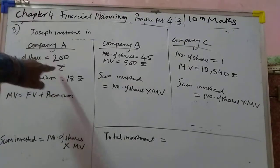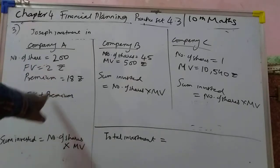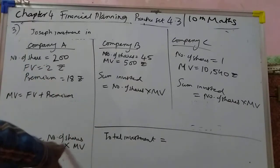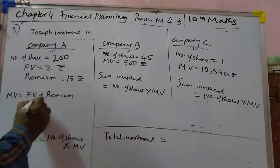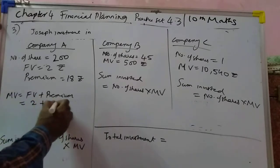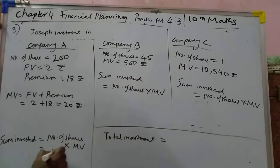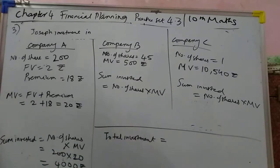Third problem: Company M has number of shares 200, face value 2 rupees, and premium 18 rupees. For sum invested, the formula is number of shares into market value. Market value equals face value plus premium, which is 2 plus 18 equals 20 rupees. So sum invested equals 200 multiplied by 20, which becomes 4000 rupees.